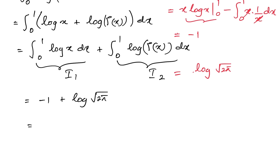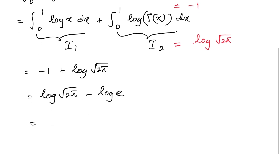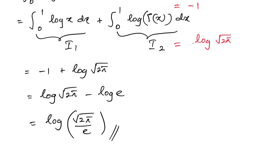Combining the results, we have I1 + I2 = -1 + ln(√(2π)). We can write -1 as -ln(e), and using the log property, this simplifies to ln(2π/e). This is the final answer. If you like this type of video, please subscribe to the channel. Thank you for watching.